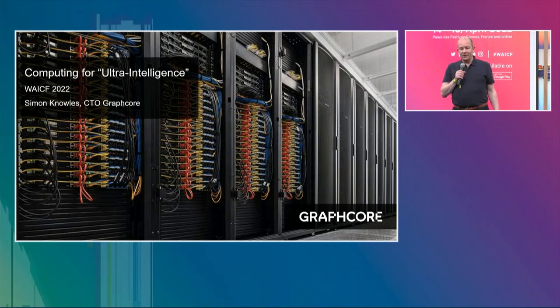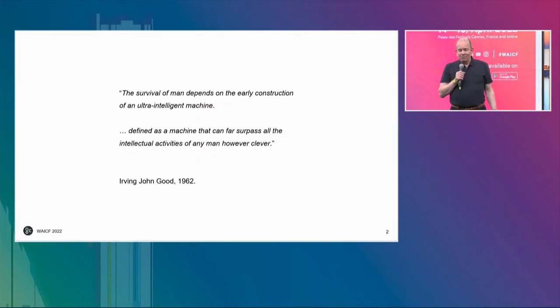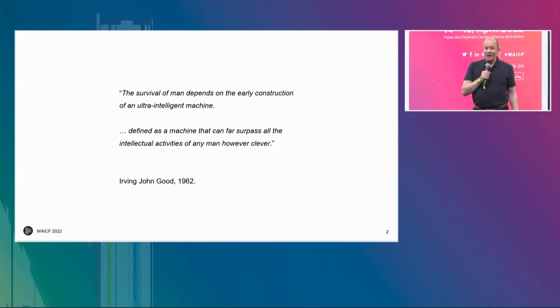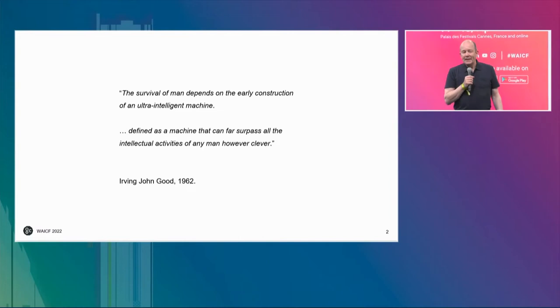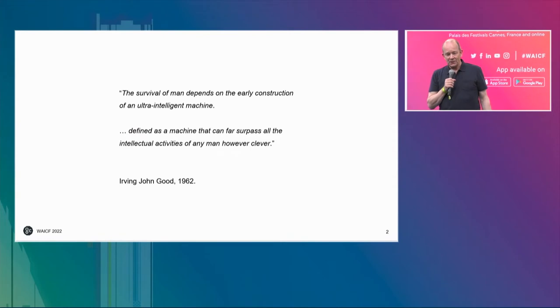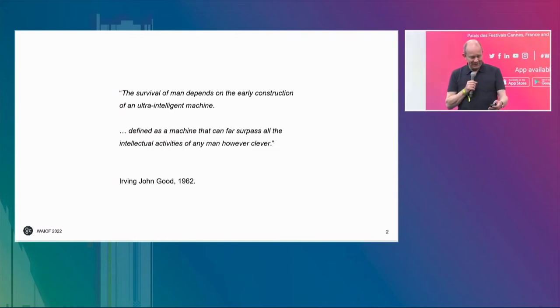Ultra-intelligence is an expression introduced in the 1960s by Erwin John Good, otherwise known as Isaac Jakob Gudak, Polish by birth. He's one of the founding fathers of thinking about the effect of building machines that exceed human potential. He maintained that the survival of man depends on the early construction of such machines. He thought we would bring about our own destruction unless we had some good advice from things cleverer than us. He defined ultra-intelligence as a machine that can far surpass any human intellect across a fairly broad range of tasks. Today is actually Good Friday, so what better day to have a quote from Jack Good on that subject.